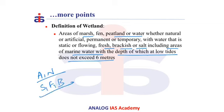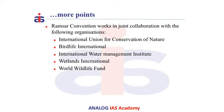Therefore, India has declared so far 37 wetlands in its territory. In India, this is being managed under the Nodal Ministry of Environment, Forest and Climate Change.